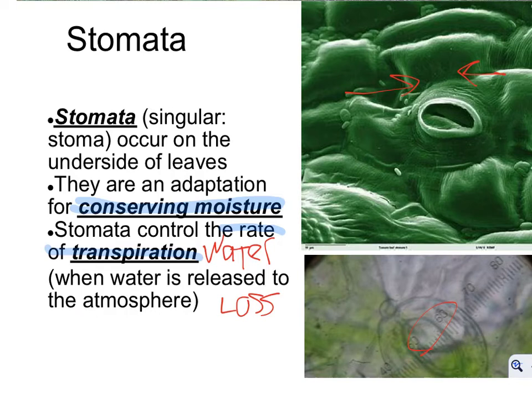Stomata — the singular is stoma. They occur on the underside of leaves and are the adaptations for conserving moisture. Stomata control the rate of transpiration, which is when water is released to the atmosphere. These are little circular-like structures. If you look under the microscope, you can see the stomata opening — it gets bigger and smaller depending on how much water is available. If there's a lot of water, the stomata open wider. In drier conditions, like a cactus in the desert, they keep their stomata really closed to hold in as much water as they can.